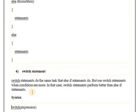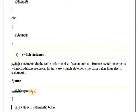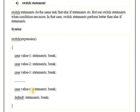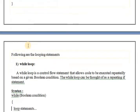Next is the switch case statement. The switch statement does the same task as the else-if statement, but switch is preferred when there are more conditions. The switch statement performs better than else-if in such cases. You can use an expression with multiple cases — case value 1, 2, 3, 4 up to n — and a default statement. If all cases are false, the default statement will be executed. The switch case statement is a multi-branch decision-making statement that provides an easy way to execute different parts of code based on the value of an expression.